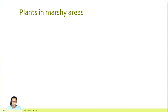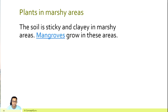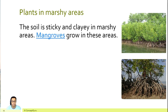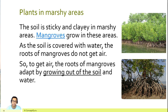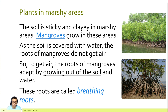Plants in marshy areas — the soil is sticky and clayey in marshy areas. Mangroves grow in these areas. As the soil is covered with water, the roots of mangroves do not get air. So, to get air, the roots of mangroves adapt by growing out of the soil and water. These roots are called breathing roots.